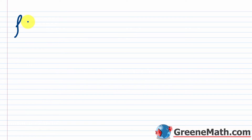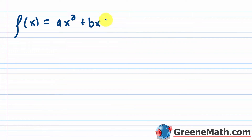In this video I'm going to talk about deriving the vertex formula, which is going to allow us to take a quadratic function — something like f of x is equal to ax squared plus bx plus c — and we specifically state here that a, the coefficient of x squared, is not zero.